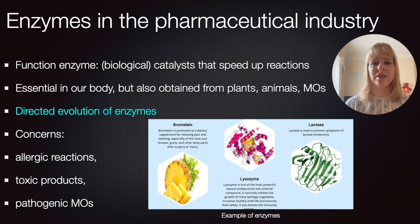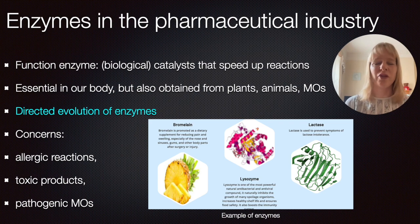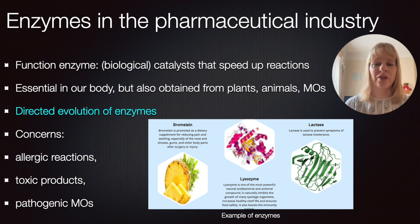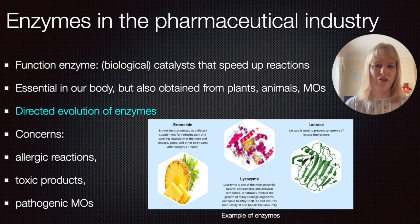Even though we know that these enzymes tend to work in a very narrow operating range — for instance, our body mostly has neutral pH and a temperature of 37°C — we can approach directed evolution of enzymes, which means you can tailor the enzyme structure to work in organic solvents and at different temperatures and pH ranges.